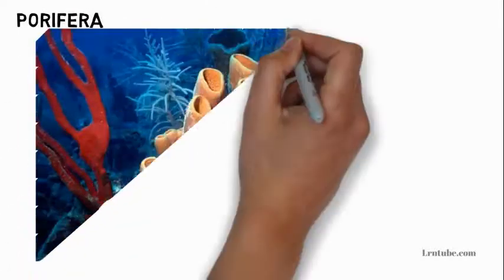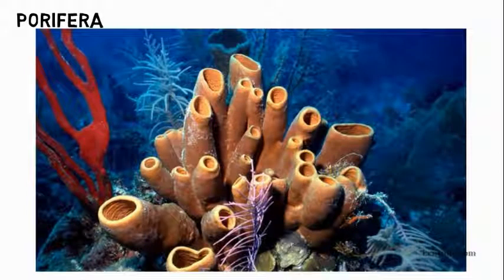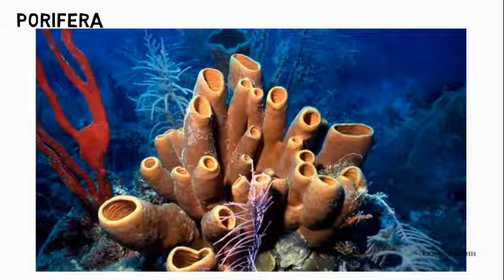Porifera: They are simple aquatic invertebrates. They do not truly locomote — they can move but cannot change their position from one place to another completely. They have asymmetrical bodies, meaning their body has disproportionate arrangements of parts exhibiting no pattern; what you find on one side may not be on the other. They lack specialized tissues. Example: the sponge.